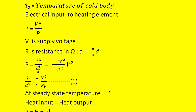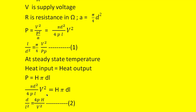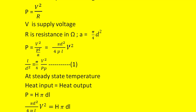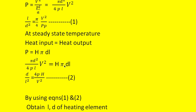At steady state temperature, whatever heat input is given, the same output will be dissipated. So heat dissipated, or heat output, is written as P = H × π × D × L, where πDL is the heating element surface area and H is the heat dissipated in watts per meter square. Substituting P = πV²D²/(4ρL) and simplifying, we get D/L² = 4ρH/V². We call this Equation 2. With two equations and two unknowns L and D, we can solve for both.